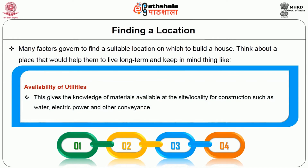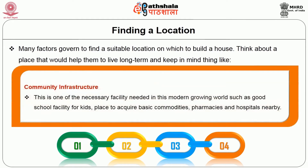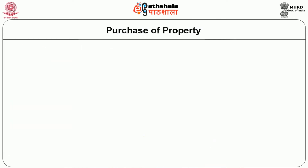Availability of utilities: this gives knowledge of materials available at the site or locality for construction, such as water, electric power, and other conveyances. Community infrastructure is one of the necessary facilities needed in this modern growing world, such as good school facilities for kids, places to acquire basic commodities, pharmacies, and hospitals nearby.